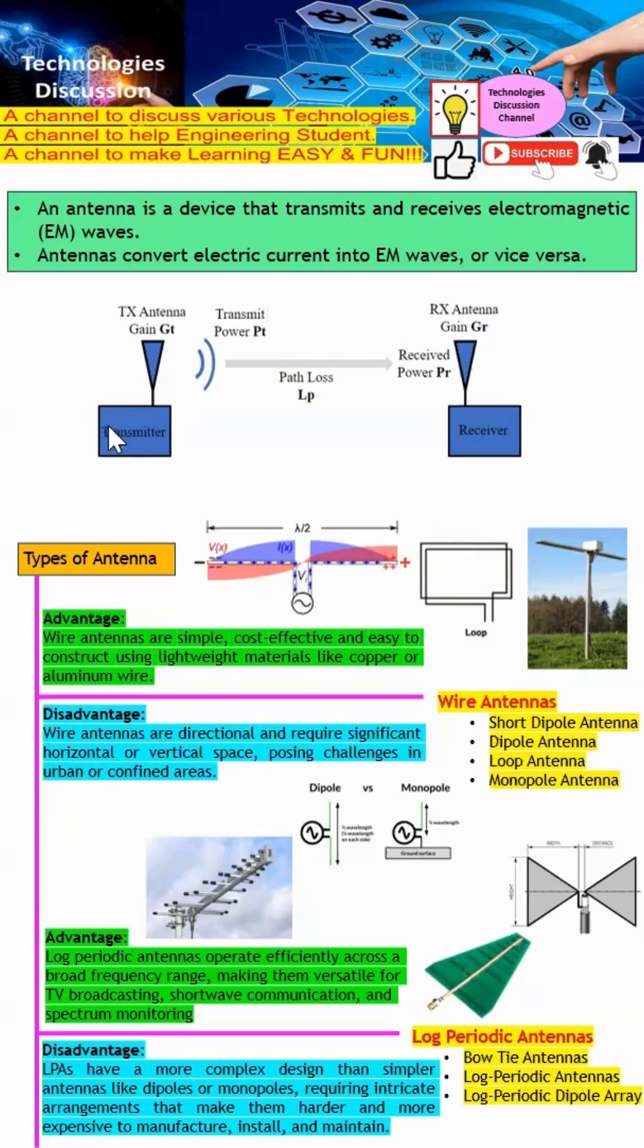This is a transmitter and a receiver. A transmitter generates an electrical signal. When it passes through the antenna, the transmit antenna converts the electrical signal into EM waves. EM waves can propagate in the air. When they hit a receiver antenna, the receiver antenna converts the EM wave into an electrical signal. This is how a signal transmits from the transmitter all the way to be received by the receiver.